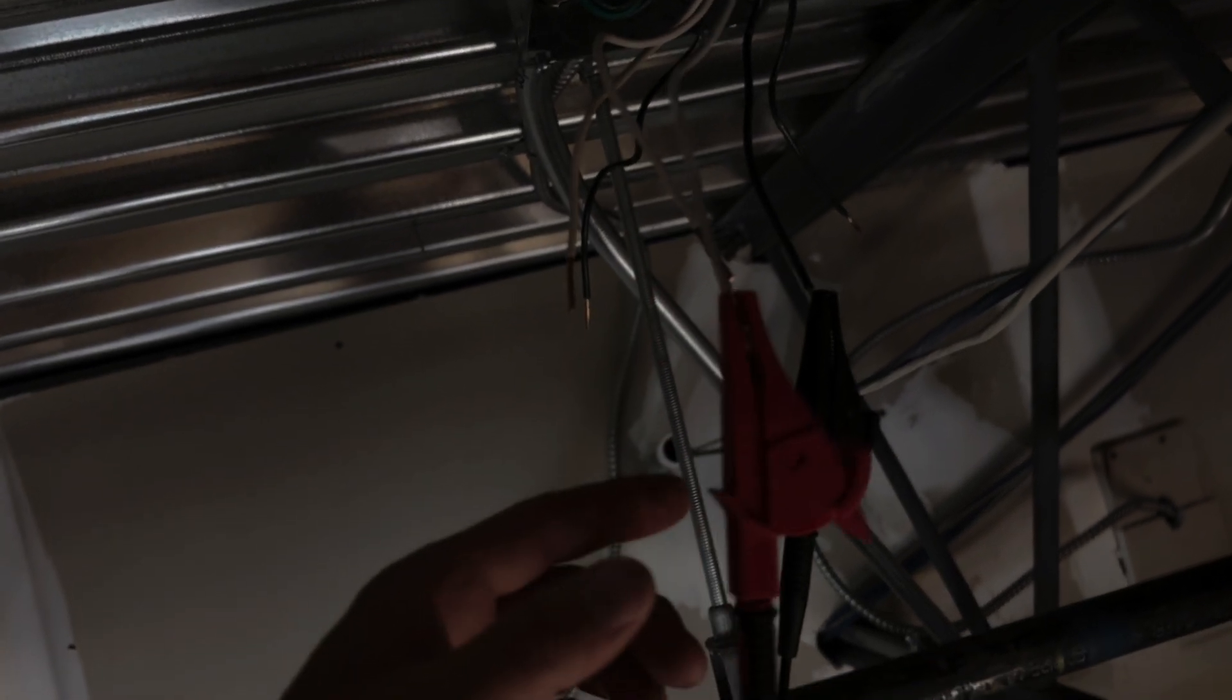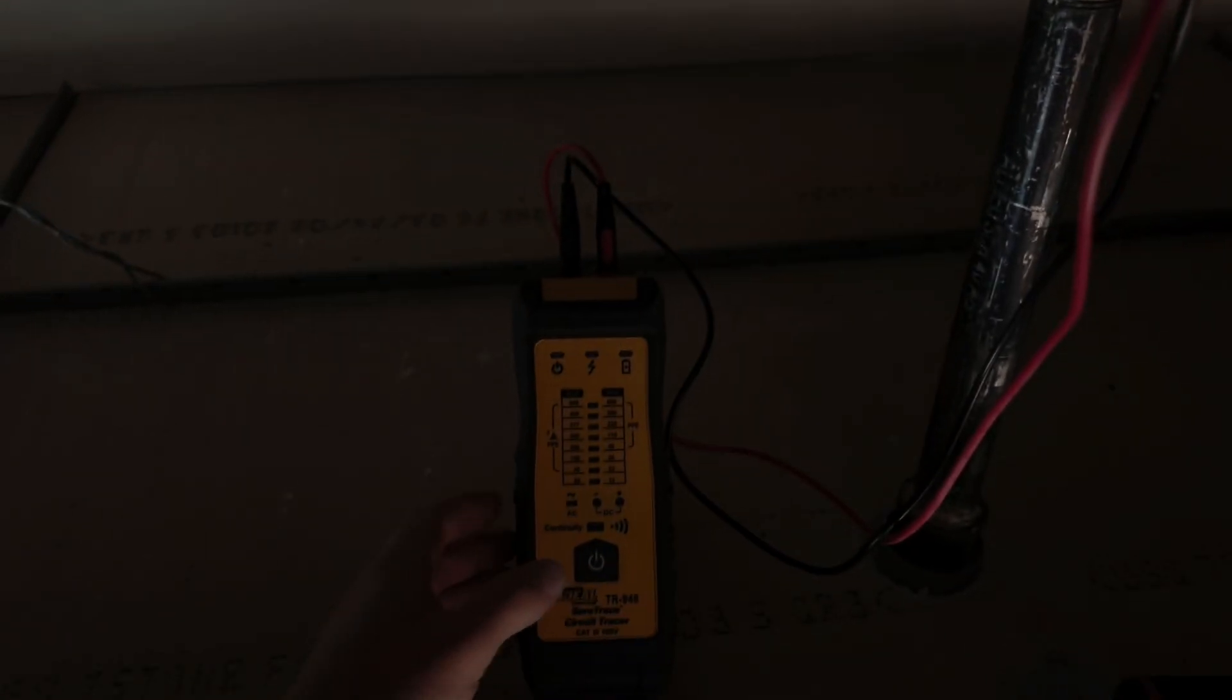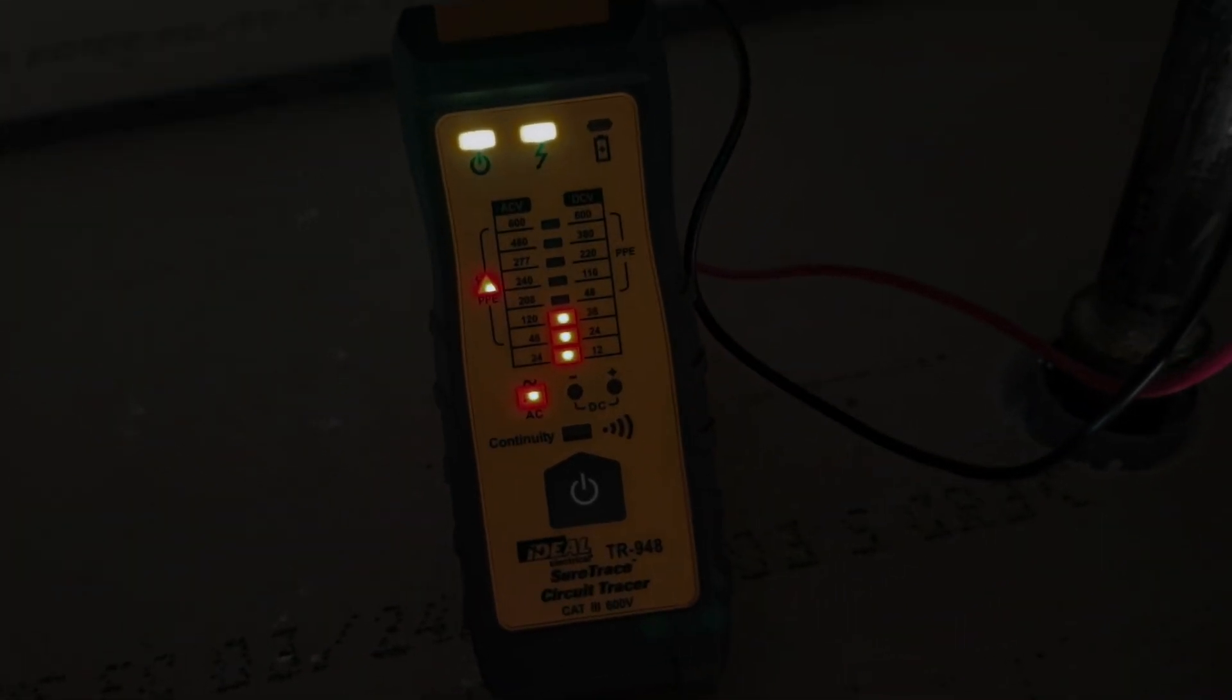So you can even see a little bit of arcing there on the neutral. And once you power up the transmitter it'll tell you the voltage. Immediately it'll test continuity.